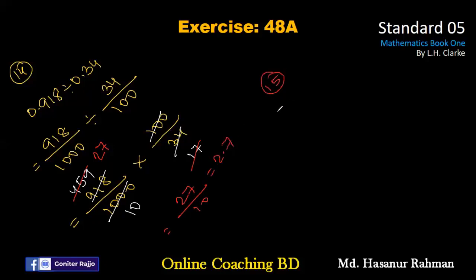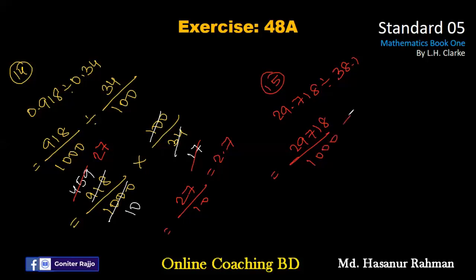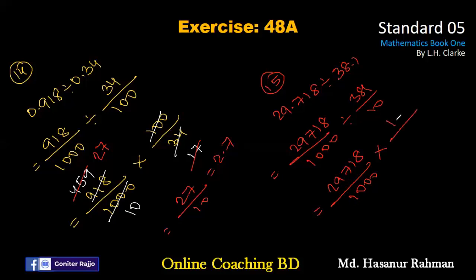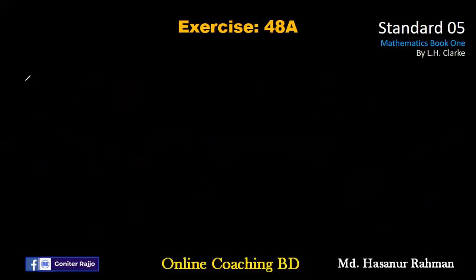Number fifteen says 29.718 divided by 38.1. 29.718 can be written as 29718 divided by 1000, and 38.1 is 381 by 10. We convert the division sign to multiplication and take the reciprocal: 10 by 381. Dividing 1000 by 10 gives 100, and 29718 divided by 381 is 78. So the final answer should be 78 divided by 100, which is 0.78.